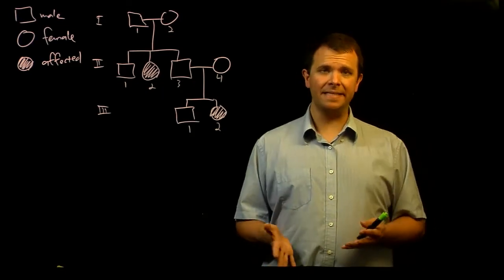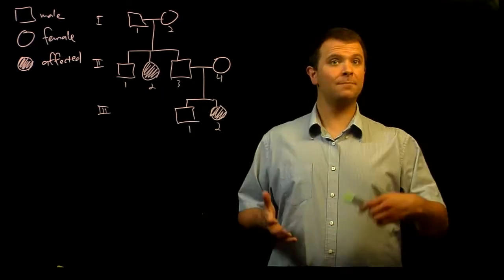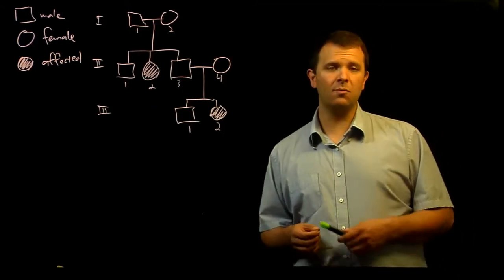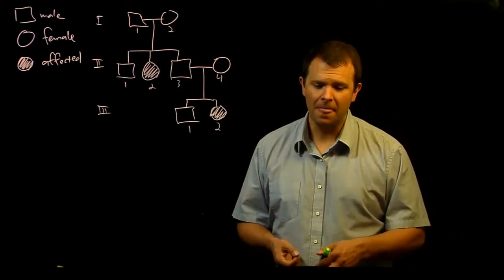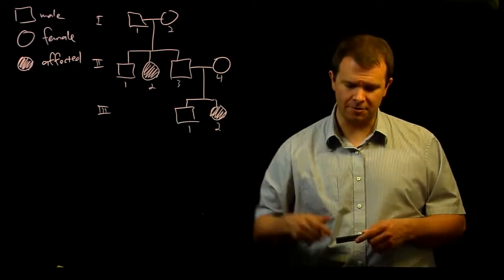And so what that means is that human genetics is purely observational. And the usual way of representing genetic data about a group of related humans is with a pedigree chart.